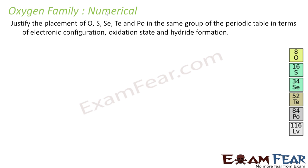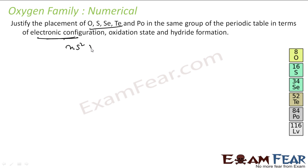Justify the placement of oxygen, sulfur, selenium, tellurium, and polonium in the same group. They are in the same group — why? If you look at the electronic configuration, it is ns² np⁴ for all of these elements. So with that it is justifiable.